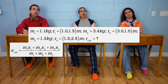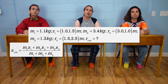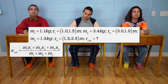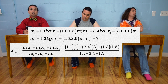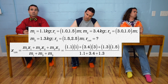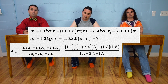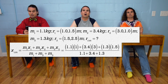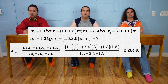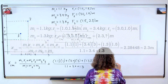Billy, please begin solving the problem. We use the equation for the x-position of the center of mass and substitute in all known values: it equals (1.1 × 1.0) + (3.4 × 3.0) + (1.3 × 1.5), all divided by (1.1 + 3.4 + 1.3). That works out to be 2.28448, or 2.3 meters with two significant digits. Correct, Billy.